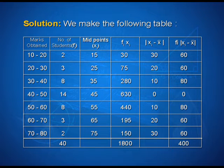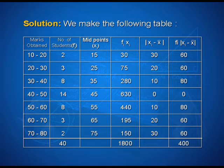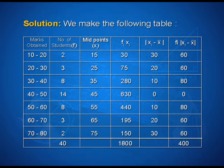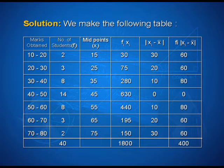Look here how we do it. We have the product of f_i and x_i in the fourth column: 2 into 15 is 30, 3 into 25 is 75, 8 into 35 is 280, and so on. We add and calculate the summation of f_i * x_i as 1800. Similarly, we have added the frequencies to find that their total is 40.